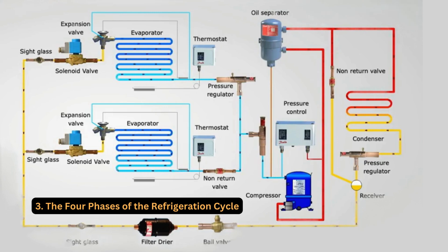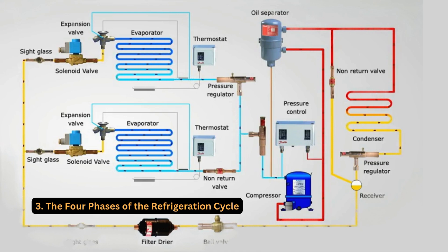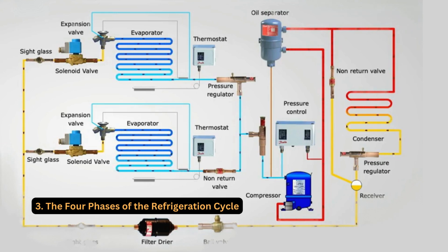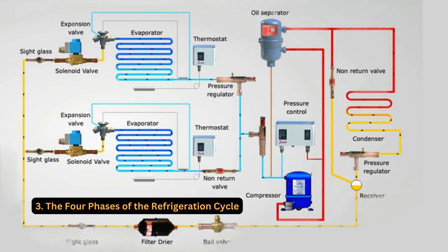Expansion: the high-pressure liquid passes through the expansion valve. The valve reduces its pressure, cooling the refrigerant. Evaporation: the cold, low-pressure liquid enters the evaporator. Heat from the surroundings is absorbed, causing the refrigerant to evaporate and cool the area.